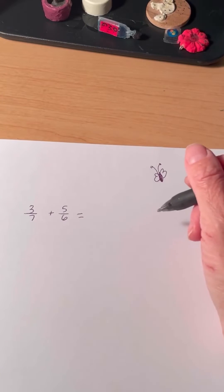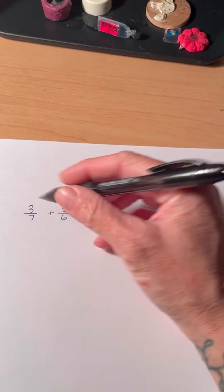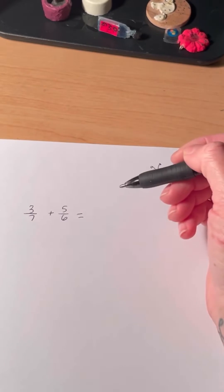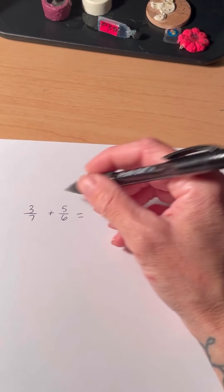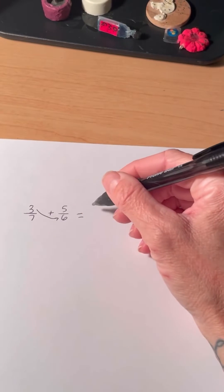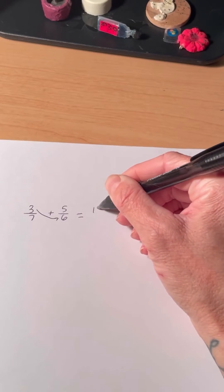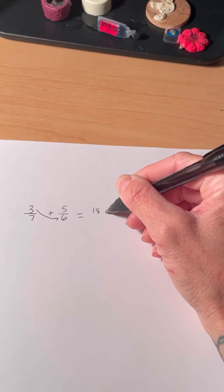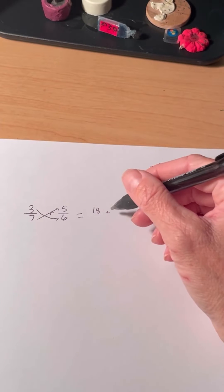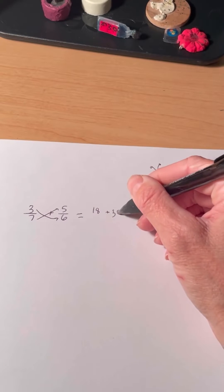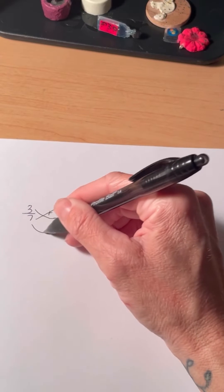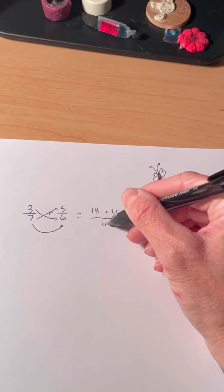Have you ever seen the butterfly method when adding fractions? Say we wanted to add 3/7 and 5/6. The butterfly method has us multiplying 3 times 6, adding it to 7 times 5, and then dividing by 7 times 6.